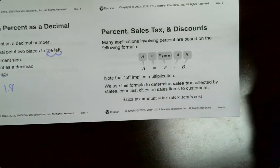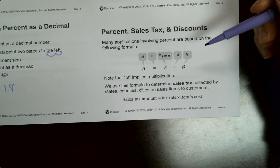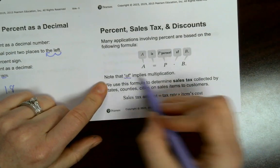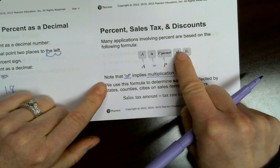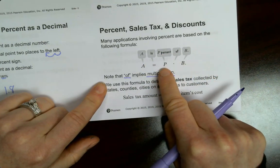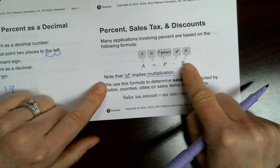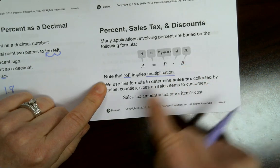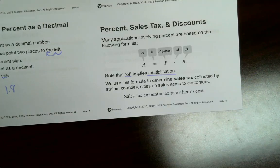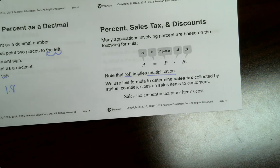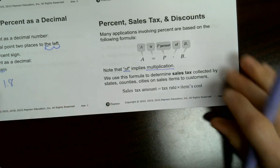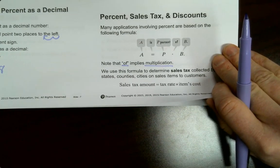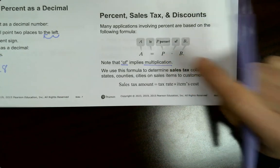Percent, sales tax and discounts. So let's start with percent of a number. The word of implies multiplication. So A is P percent of B. So what you'll do is you multiply the percent times whatever B is. We use this formula to determine sales tax collected by states, counties, cities on sales tax items or sales items to customers. So you do your tax rate times your items cost.